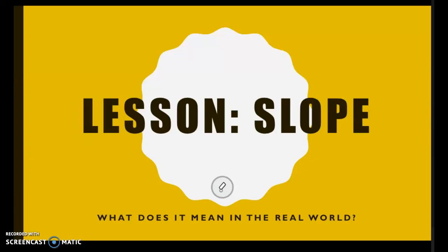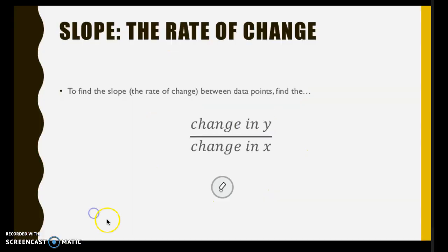Alright, today we're going to be looking at slope and thinking about what it means in the real world. Slope is the rate of change. It tells you what something is changing by. To find the slope, the rate of change between data points, you can always find the change in y and divide that by the change in x.